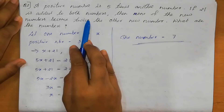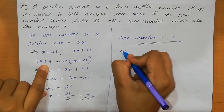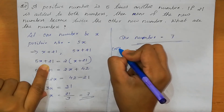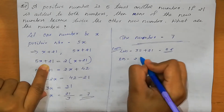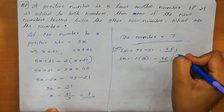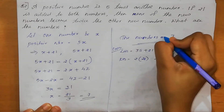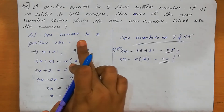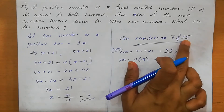We can check: if 21 is added to both numbers, then one of the numbers becomes 2 times the other. LHS equals 5 into 7 — 35 plus 21 equals 56. RHS equals 2 into X plus 21 — X is 7, so 21 plus 7 is 28, and 2 into 28 equals 56. Both are equal, so our answer is correct. The numbers are 7 and 35.